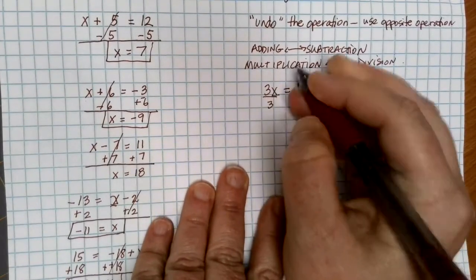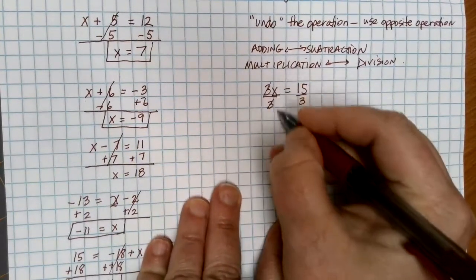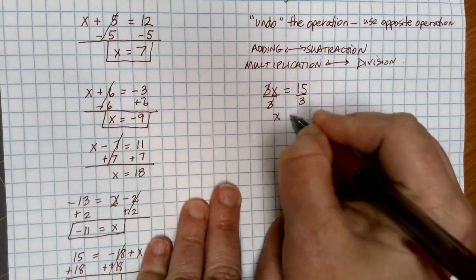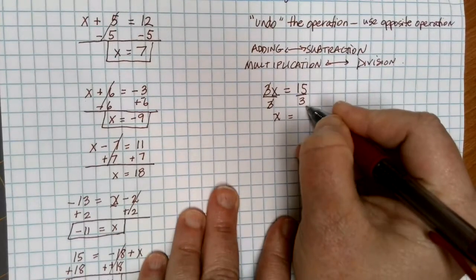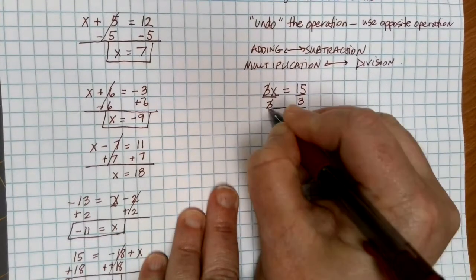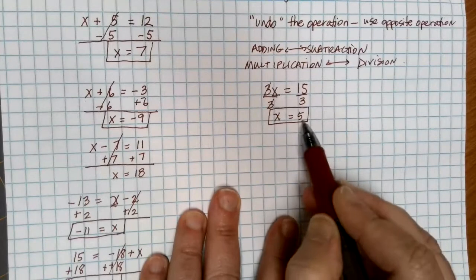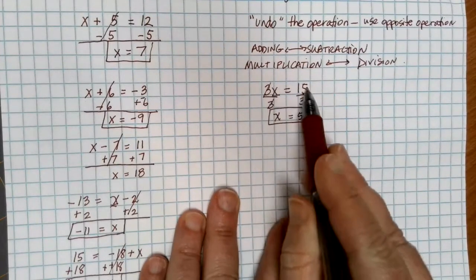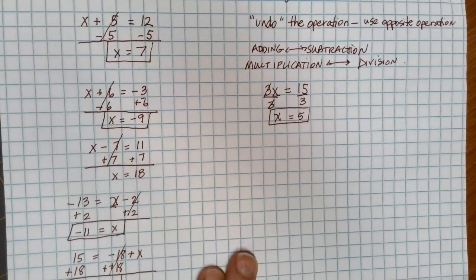Multiplying by 3 and dividing by 3 undo each other, and I'm left with just a single x. And on the other side, I can do 15 divided by 3, which is 5. Same idea, I can plug the 5 back in, 3 times 5 is 15, and my equation solution works out.